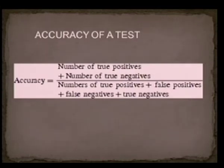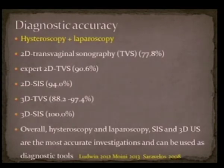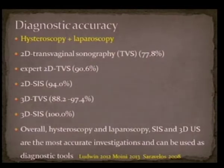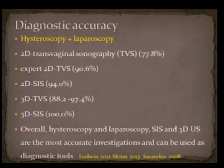Before switching to the diagnostic modalities, I will mention what the accuracy of a test is: the number of true positives plus true negatives over all cases — true positives, false positives, false negatives, and true negatives. For diagnosis of Müllerian abnormalities, hysteroscopy plus laparoscopy is still the gold standard. In increasing order of accuracy: 2D transvaginal sonography at nearly 80%; expert 2D sonography at 90%; 2D saline infusion sonography at more than 90%; and 3D transvaginal and 3D saline infusion sonography at 100%, equivalent to hysteroscopy plus laparoscopy. Overall, hysteroscopy with laparoscopy, saline infusion sonography, and 3D ultrasound are the most accurate investigations.